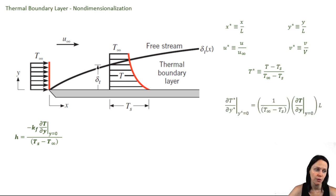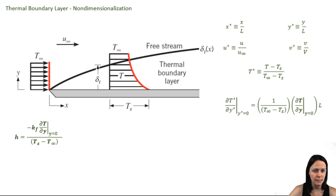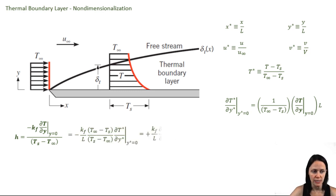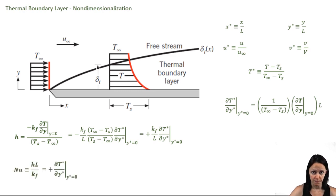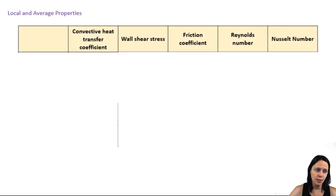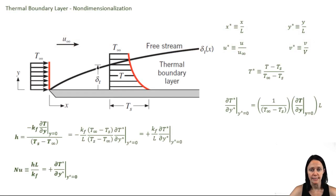You can see that if we take the derivative of T-star with respect to y-star, we can get it in terms of some more familiar things. We can plug this into the equation for H, cancel some terms, and see that the negative sign cancels out. So H has been defined in terms of non-dimensionalized variables. This leads us to introduce another non-dimensionalized term: the Nusselt number, which is our non-dimensionalized heat transfer coefficient, and we can see how it is related to the non-dimensionalized temperature gradient.